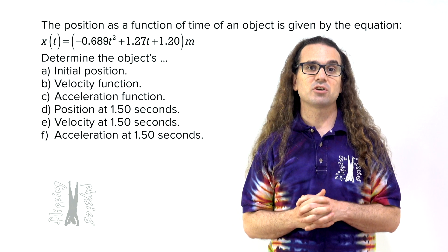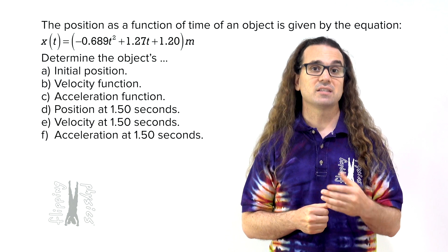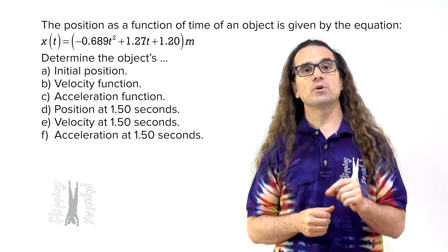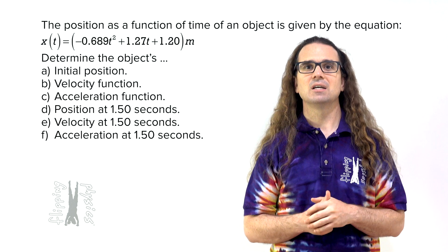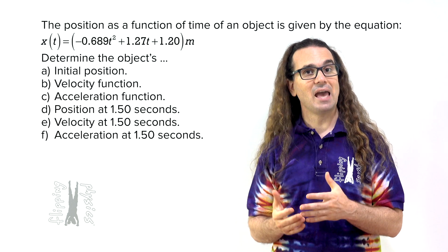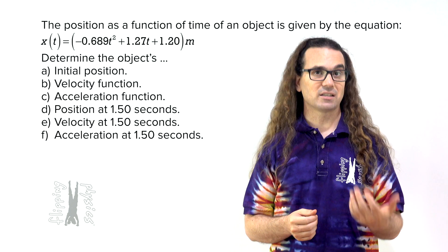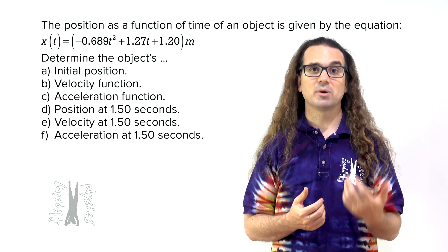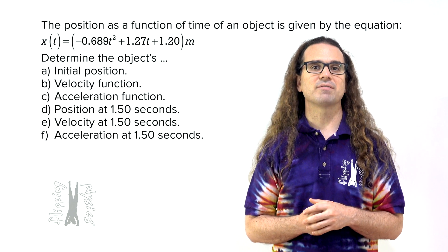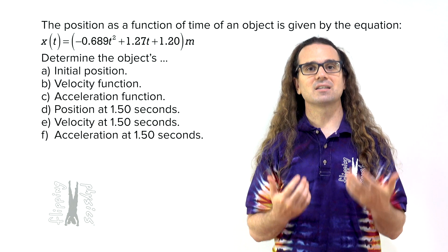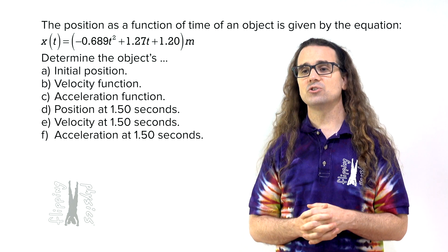Good morning. The position as a function of time of an object equals negative 0.689 times time squared plus 1.27 times time plus 1.20 meters. Let's determine the object's: a) initial position, b) velocity function, c) acceleration function, d) position at 1.50 seconds, e) velocity at 1.50 seconds, and f) acceleration at 1.50 seconds. Bobby, please do part A.